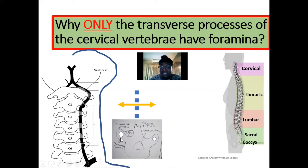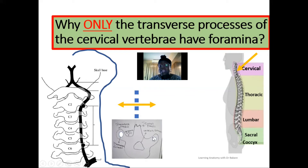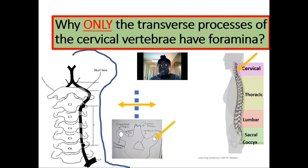On the transverse processes of just the cervical vertebra is where we have the formation of the foramen. These foramina are holes created on the transverse processes of only the cervical vertebra, while other vertebral bones do not have this hole on their transverse processes. This is the transverse foramen created on the transverse process of just the cervical vertebra.